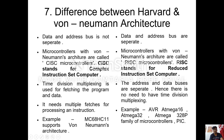Harvard architecture needs multiple fetches for processing an instruction, whereas Von Neumann architecture does not need multiple fetches for executing an instruction. An example of a microcontroller which uses Von Neumann architecture is MC68HC11. An example of microcontrollers designed with Harvard architecture are AVR ATmega16, ATmega32, and ATmega328P.